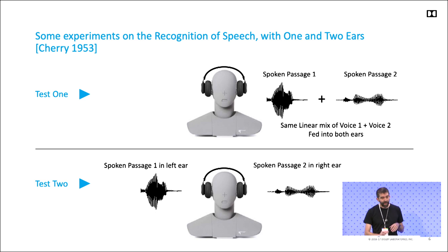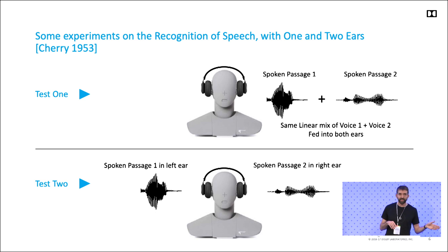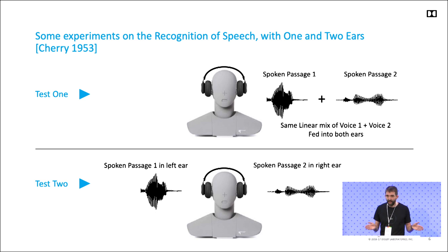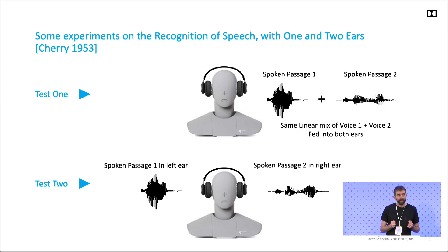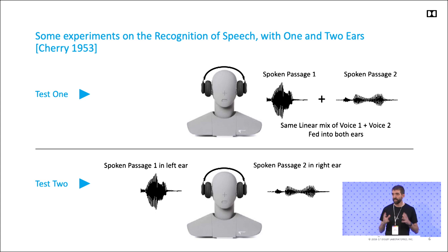In test two, they played passage one in the left ear and passage two in the right ear, and the participants could easily read back passage one without any strain — it was very easy to do. The other interesting note was that when asked about passage two, they couldn't say anything about it. It was as if their brain had filtered out passage two completely and they just focused on passage one.